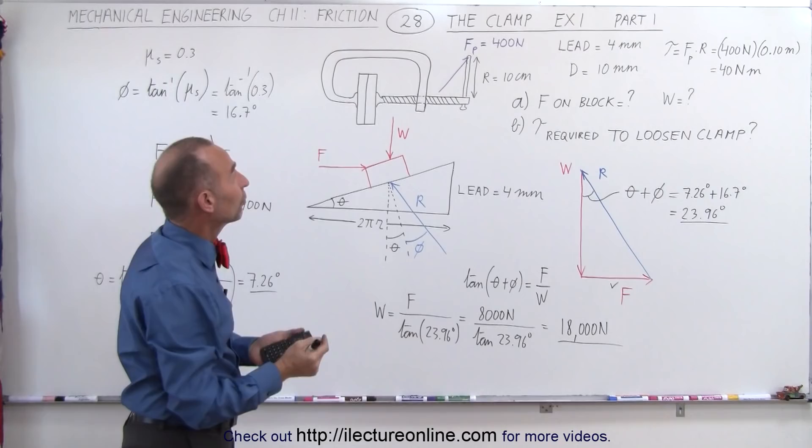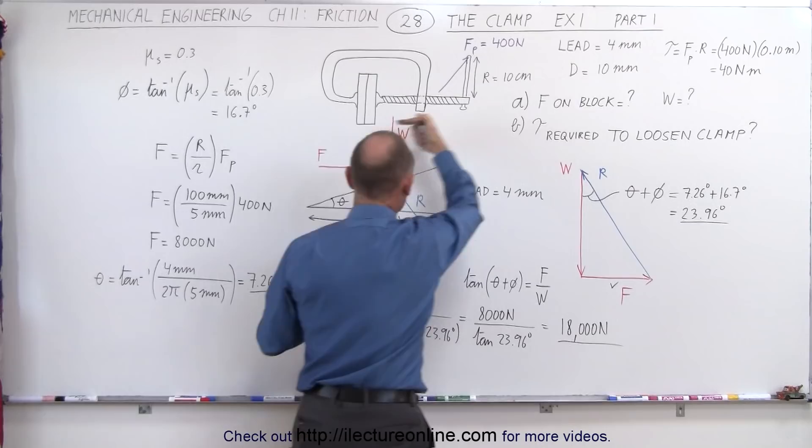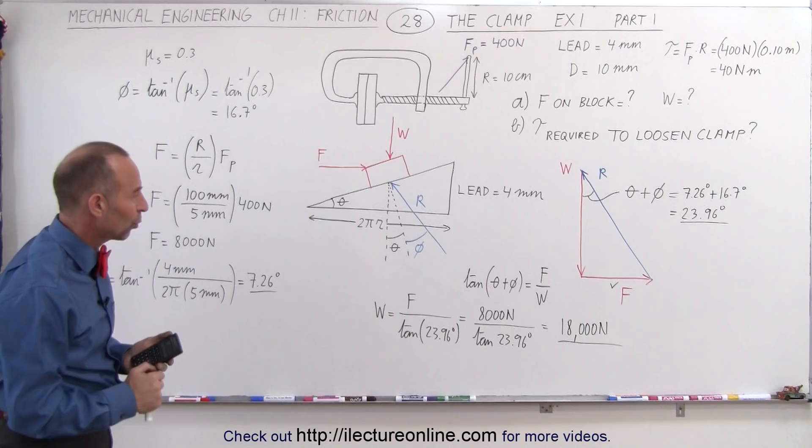a small amount of force, 400 newtons is not that large. By applying a 400 newton force, we can apply a force clamping the two pieces together of 18,000 newtons, which is quite a large force.